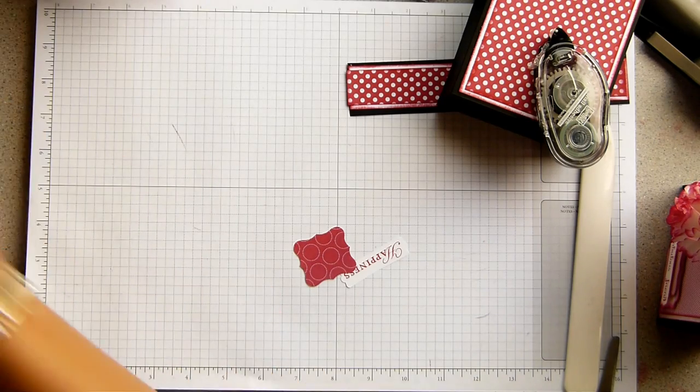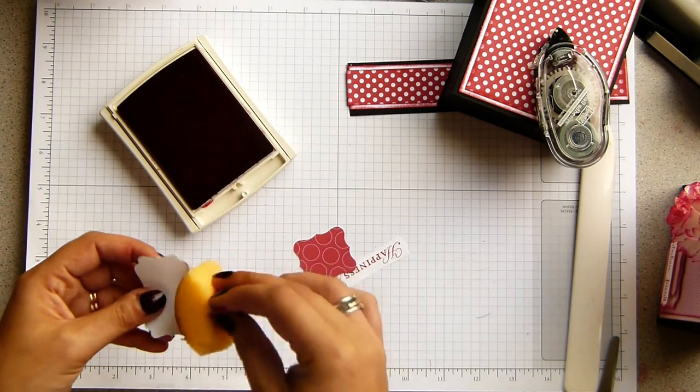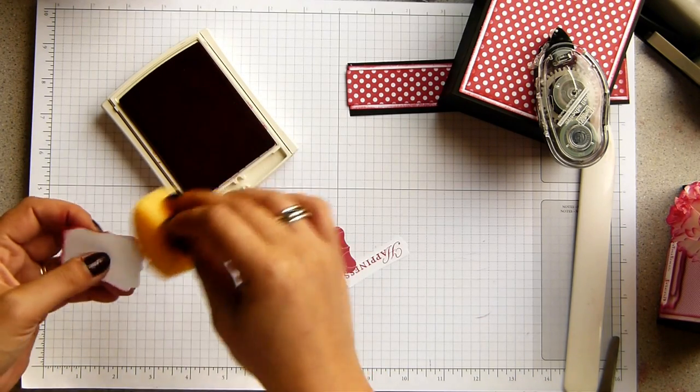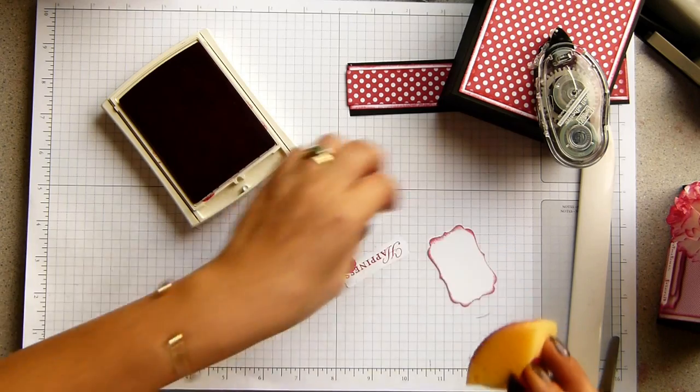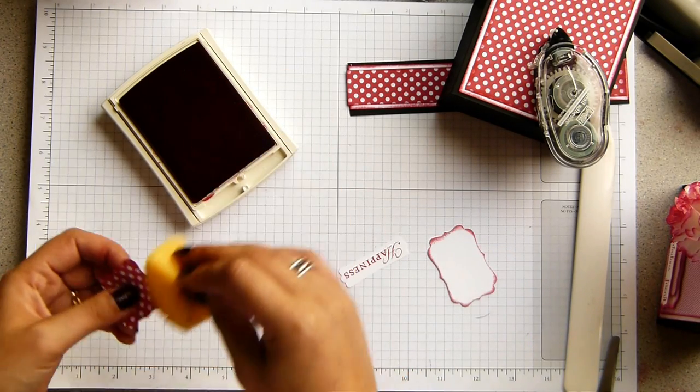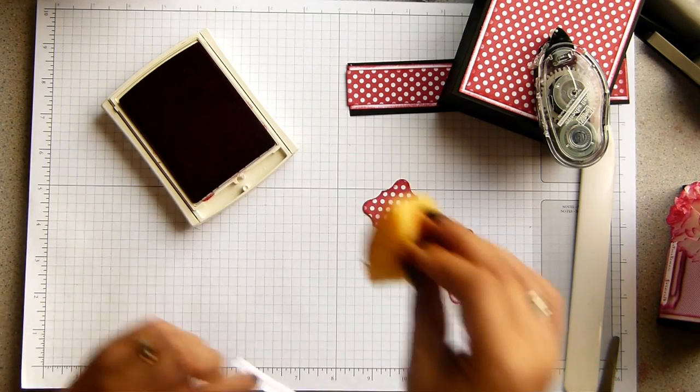Move that back out of the way, bring in my ink, sponge everything up. Like I say, as I said before, if you were mass producing loads of these, you would sit and do all of your cutting first, then you do all your stamping, then you would do all your sponging, then you would do all your layering, and that's how you would do it.